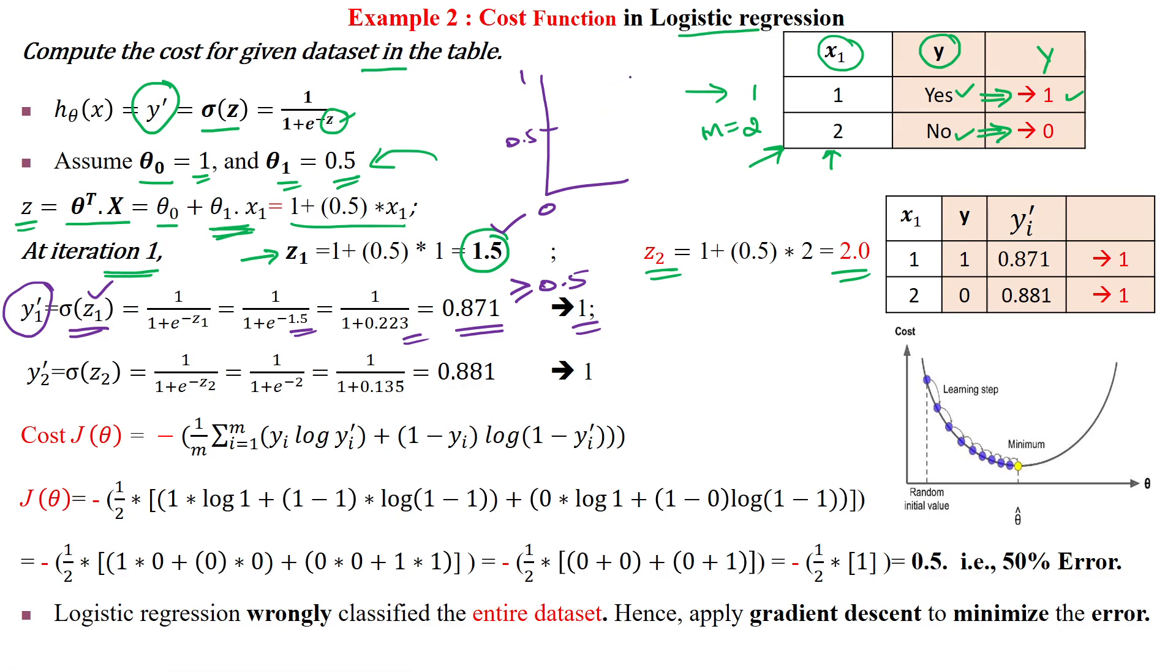Values greater than 0.5 become 1, and values less than 0.5 become 0. The first sample has actual value 1 and is predicted as ŷ₁ = 1.